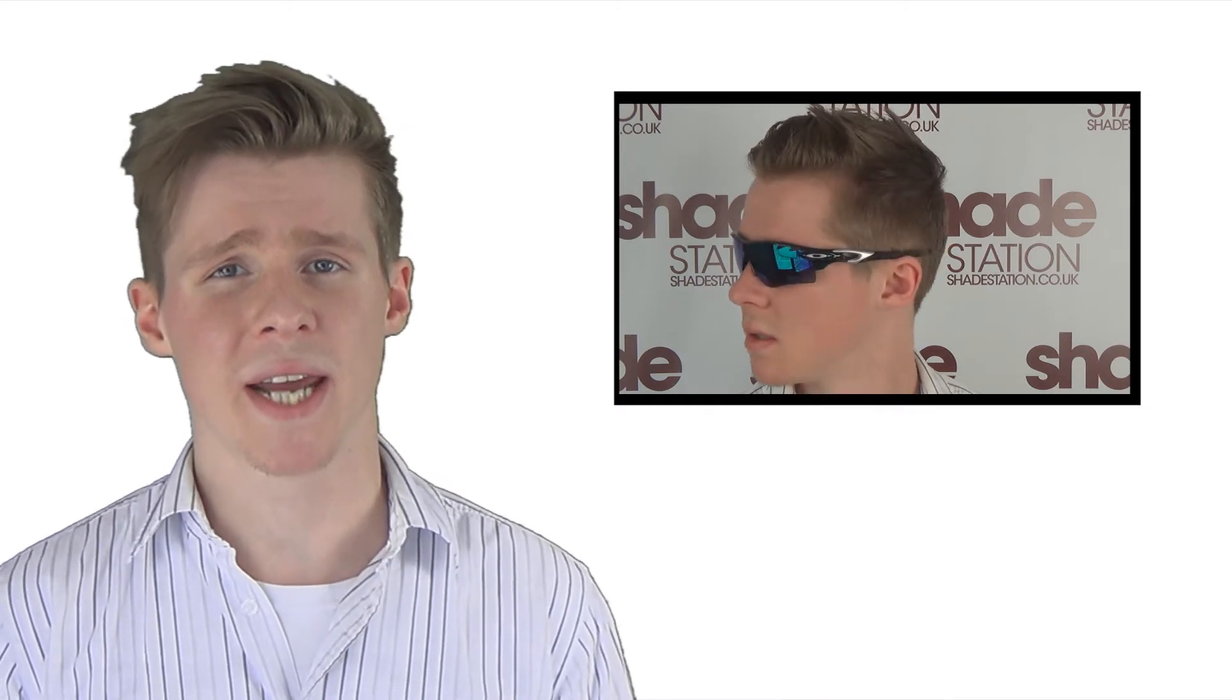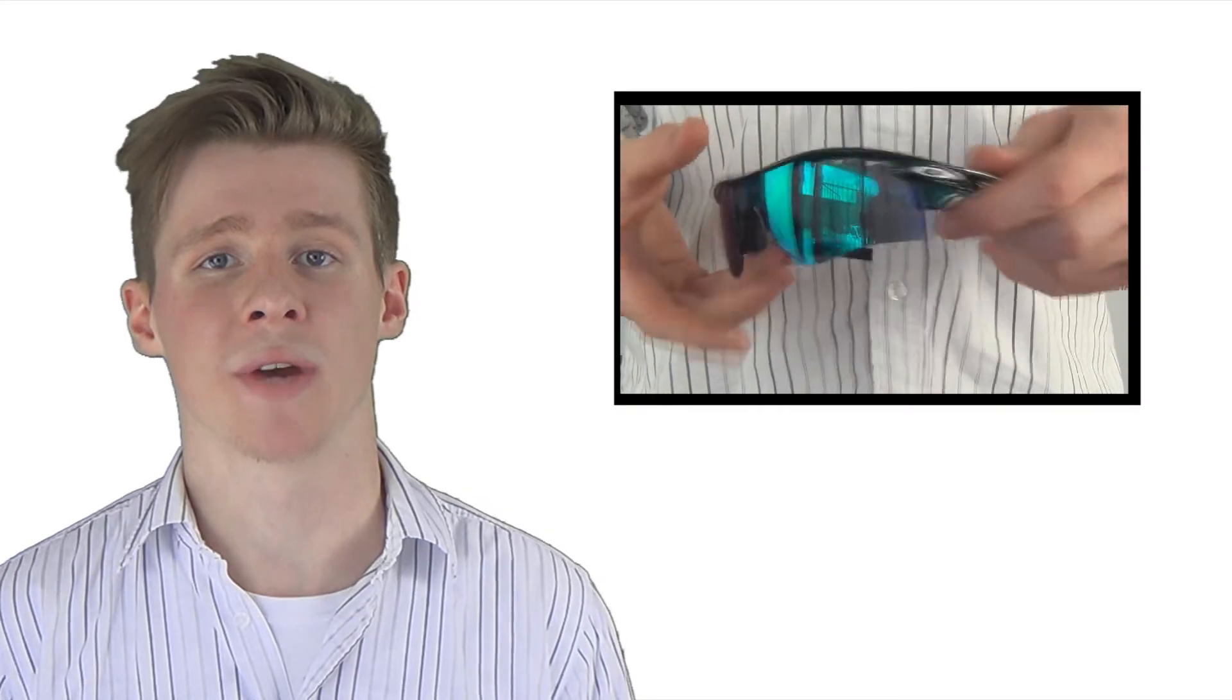The Mark Cavendish Radar Locks that we also have, obviously quite popular with the Tour de France. Mark Cavendish wears them himself and he has a jade iridium lens in there, which is sort of a green shaded lens, perfect for medium to high light. Medium being the green base and then it's iridium coated for any bright sunlight which will come and try and get through your lens.